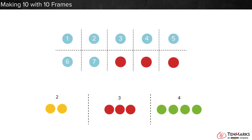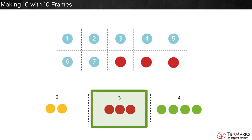The answer choices are 2, 3, and 4. Pick 3. 7 dots and 3 more dots makes 10 dots.